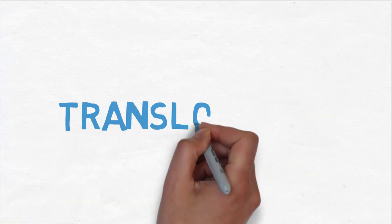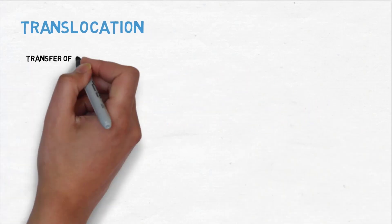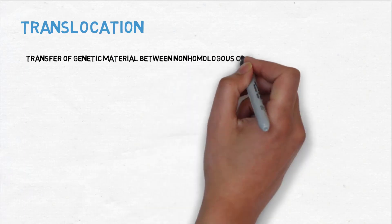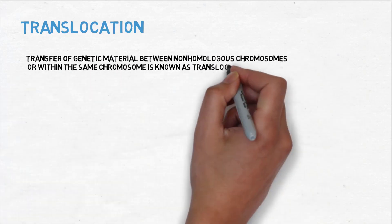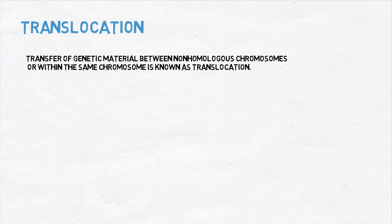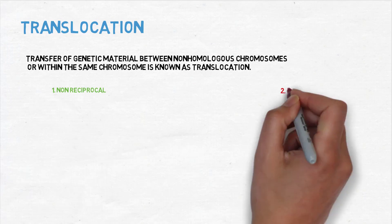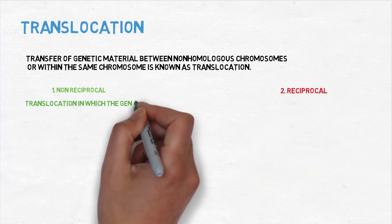Let's move on to the next type of chromosomal rearrangement — translocation. What is translocation? It is the transfer of genetic material between non-homologous chromosomes or within the same chromosome. It is of two types: non-reciprocal and reciprocal.